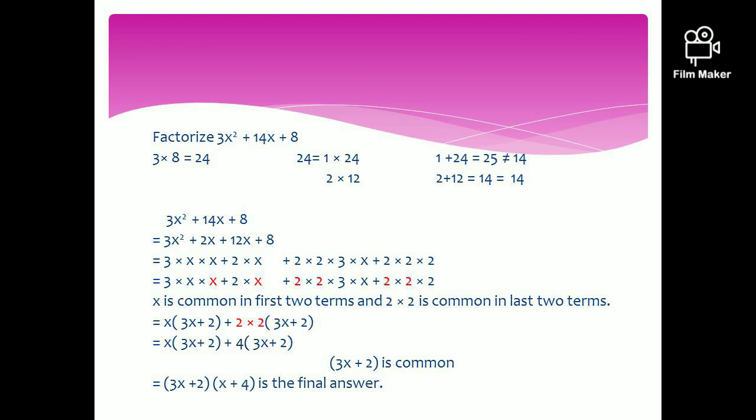Following the same steps: x is common from the first two terms and 4 is common from the next two. This gives x times 3x plus 2 plus 4 times 3x plus 2. If done correctly, you will always get the same bracket at this stage — if you don't, you have made an error and need to restart. Therefore, the final answer is 3x plus 2 times x plus 4.